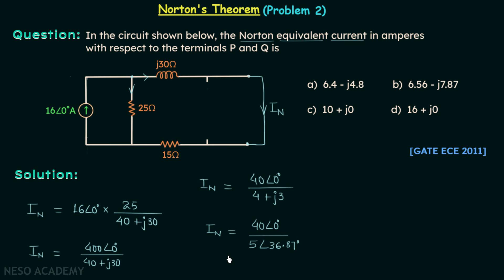Now we will divide 40 by 5 and subtract 36.87 from 0. So we have IN equal to 40 divided by 5, which is 8 angle minus 36.87 degrees.